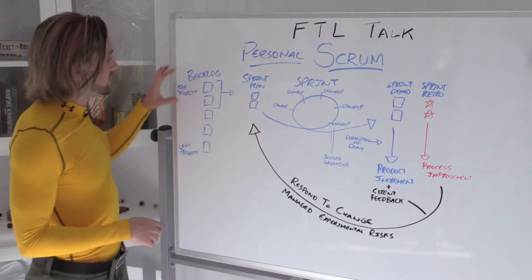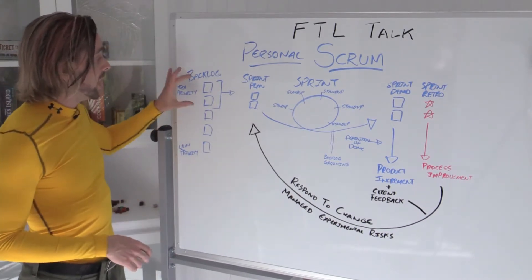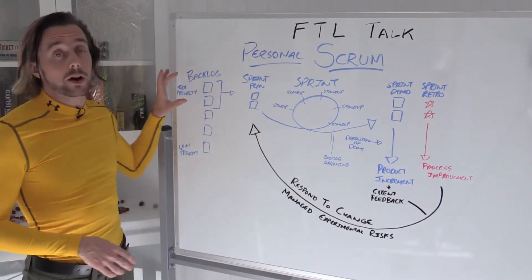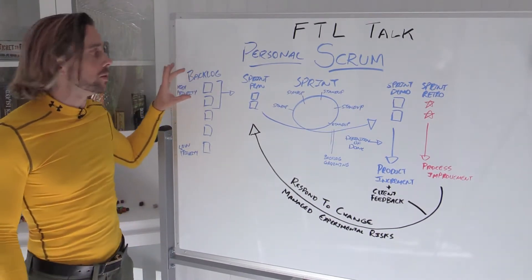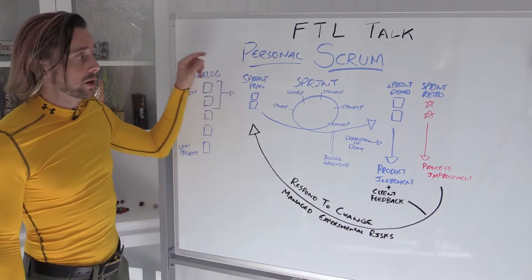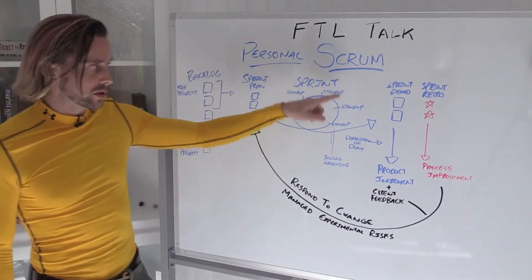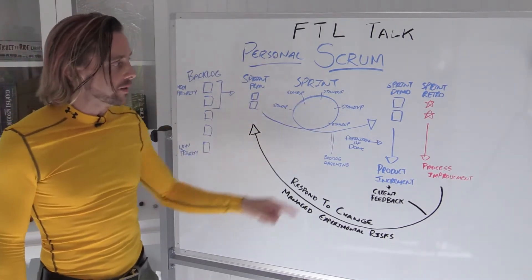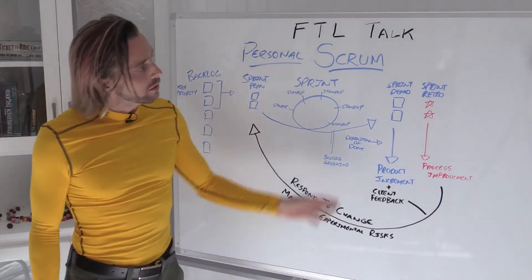What are you going to do? Take items from your backlog — the highest priority ones — only as many as you can do in one sprint. Add those into the sprint plan. Go ahead and do those using all your sprinty stuff that you're doing.